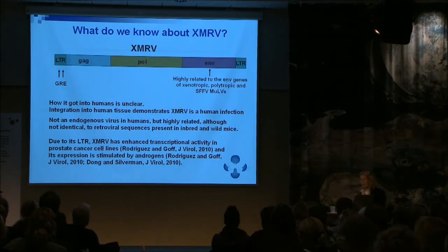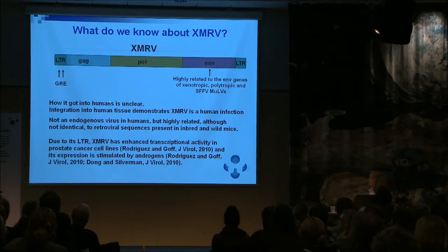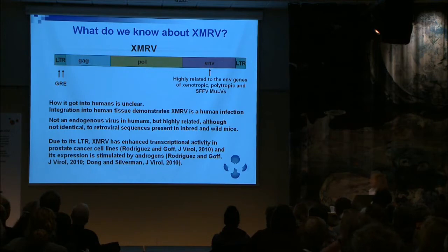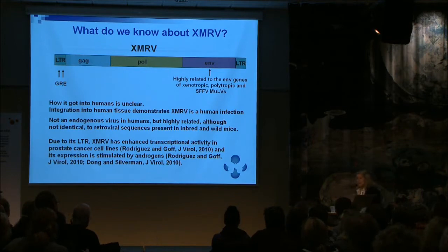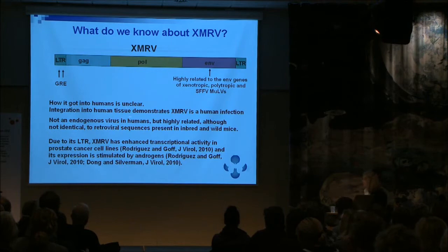What we know about the virus now is that how it got into humans is unclear. It's known as a simple retrovirus because it makes only the structural genes — the gag, the pol, and the envelope. The envelope gene is very highly related to the envelope gene of the spleen focus-forming virus family. In that family of viruses, the envelope is both an oncogene — causing cancer — and a neurotoxin. Infection with this family of viruses in animals is associated with neurological disease, neurodegenerative disease, and aggressive leukemias. It's not an endogenous virus, but very highly related, though not identical, to sequences in inbred and wild mice.